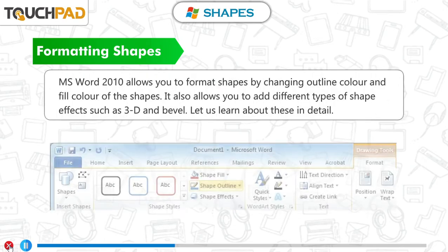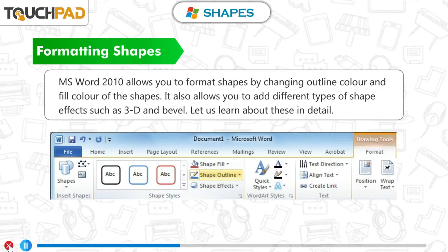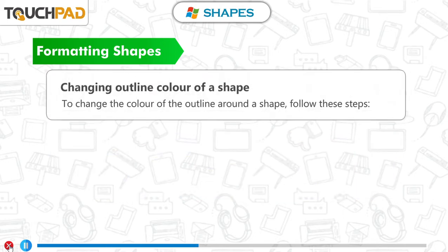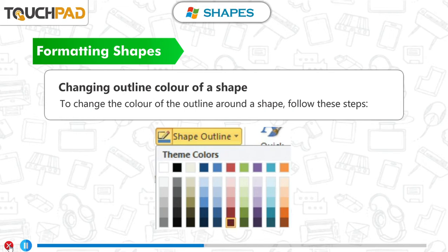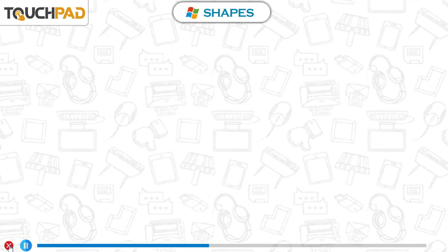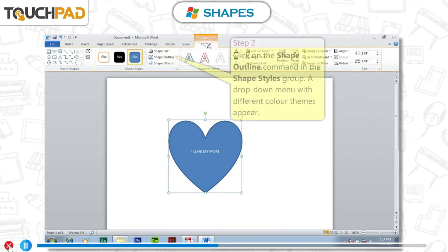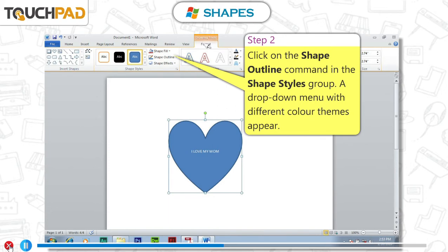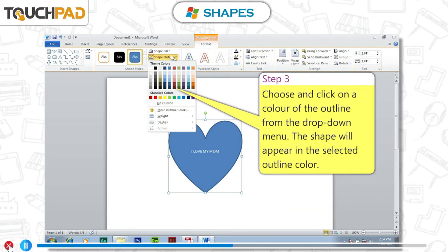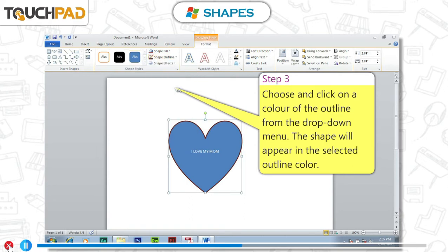Formatting shapes. MS Word 2010 allows you to format shapes by changing outline color and fill color of the shapes. It also allows you to add different types of shape effects such as 3D and bevel. Changing outline color of a shape: To change the color of the outline around a shape, follow these steps. Step 1: Click on the shape to select it and click on the Format tab. Step 2: Click on the Shape Outline command in the Shape Styles group. A drop-down menu with different color themes appears. Step 3: Choose and click on a color of the outline. The shape will appear in the selected outline color.